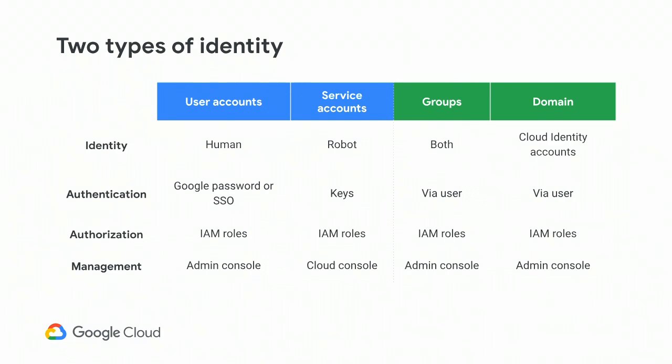The way these accounts authenticate is different. When you have a human account, you log on to GCP, type in your username and password, and enter your second or third factor of authentication. When a service account wants to authenticate, it's provided a key that says this service account is accredited for this organization for this scope of operations.